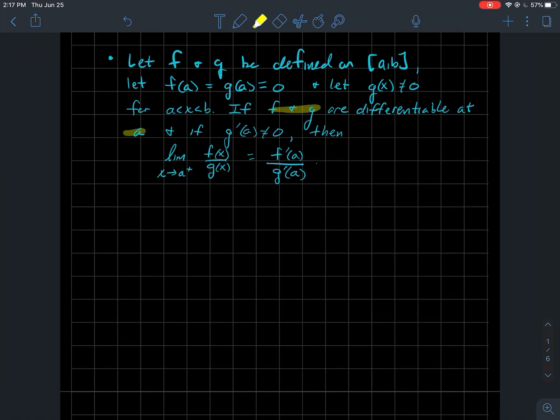So if I finally assume that f and g are both differentiable at the point a, the left endpoint of this interval here, and if I also assume that the derivative of g at a, g prime of a is not zero, then what can I say?